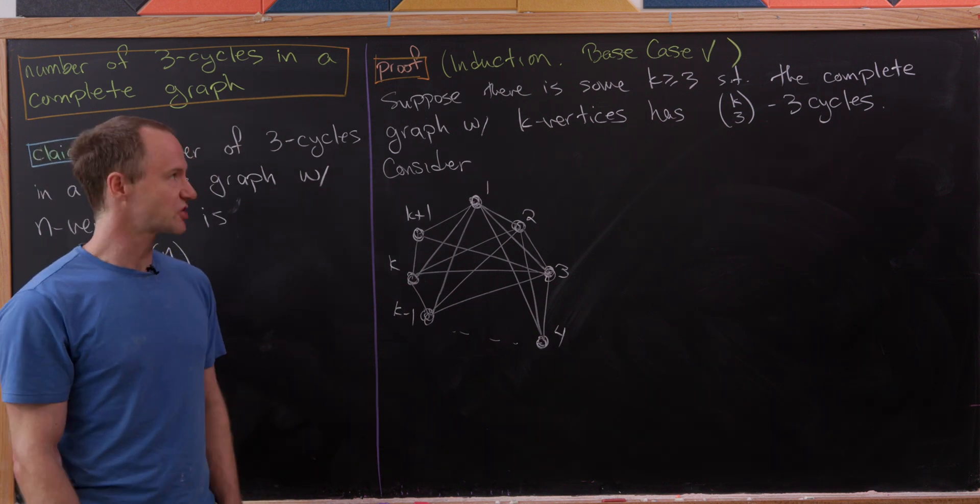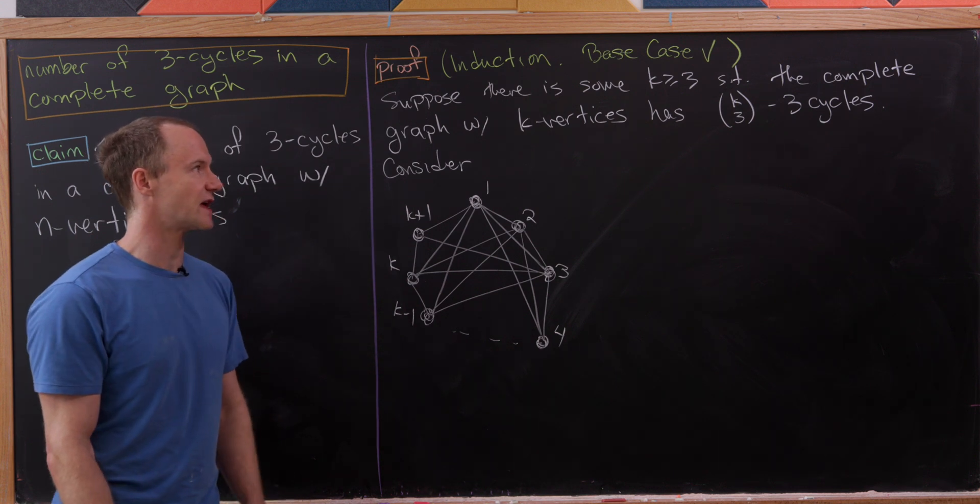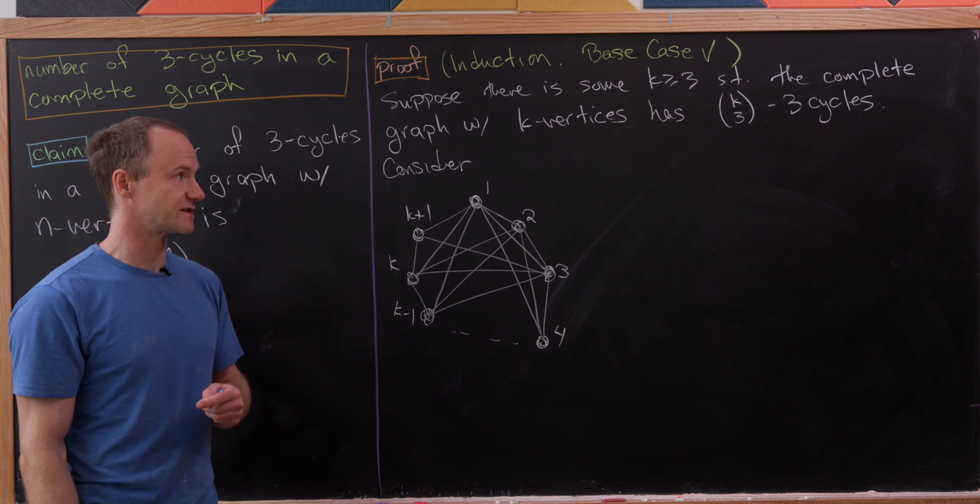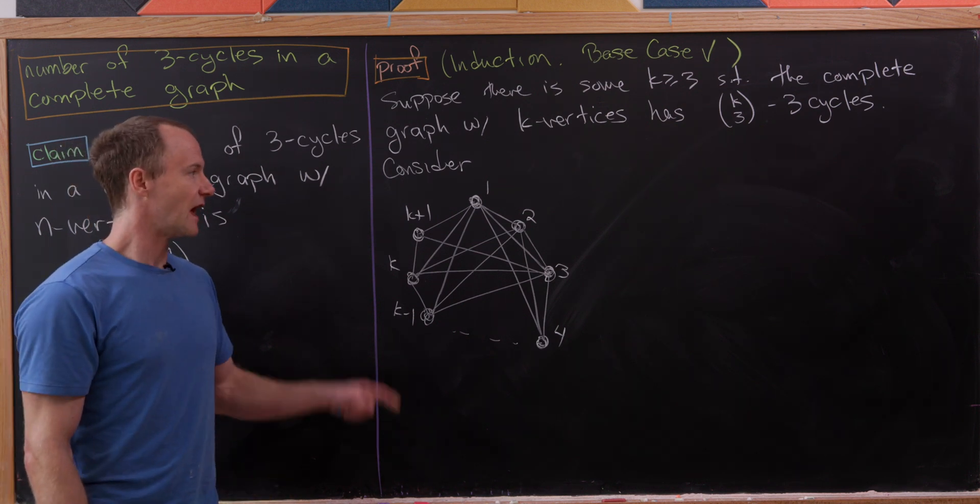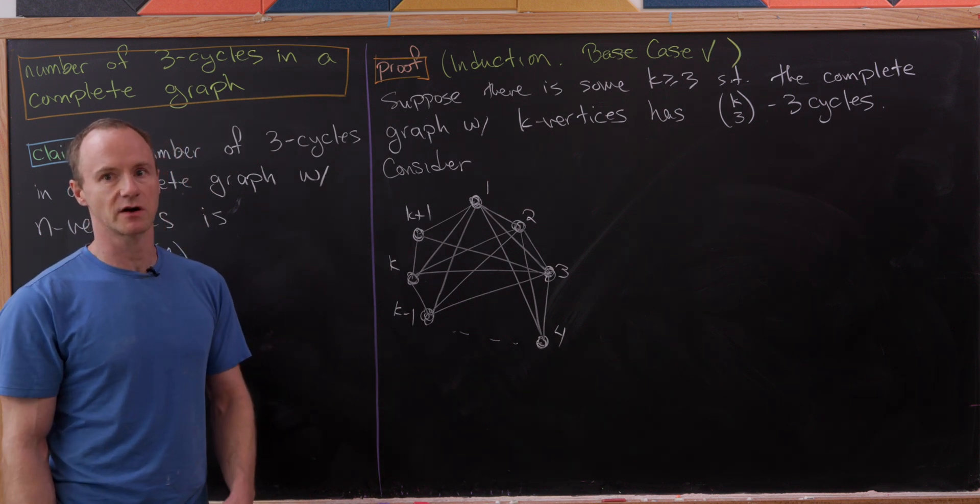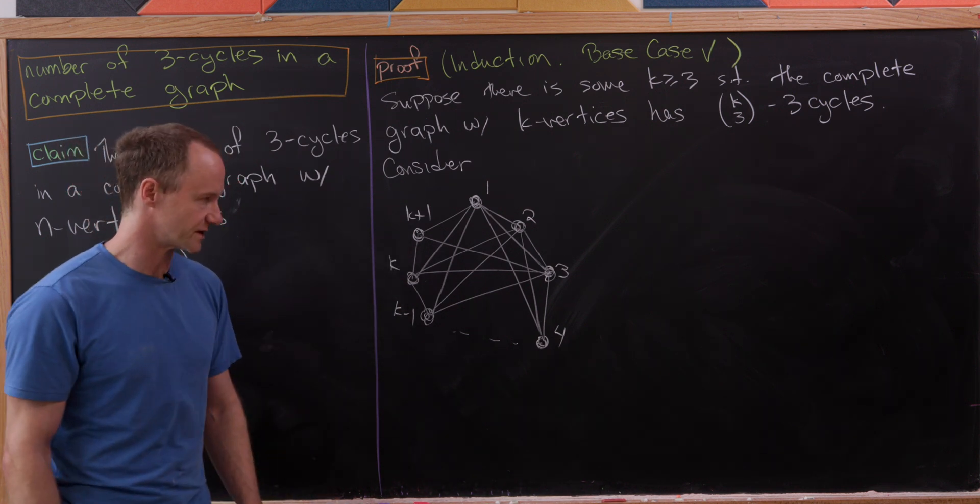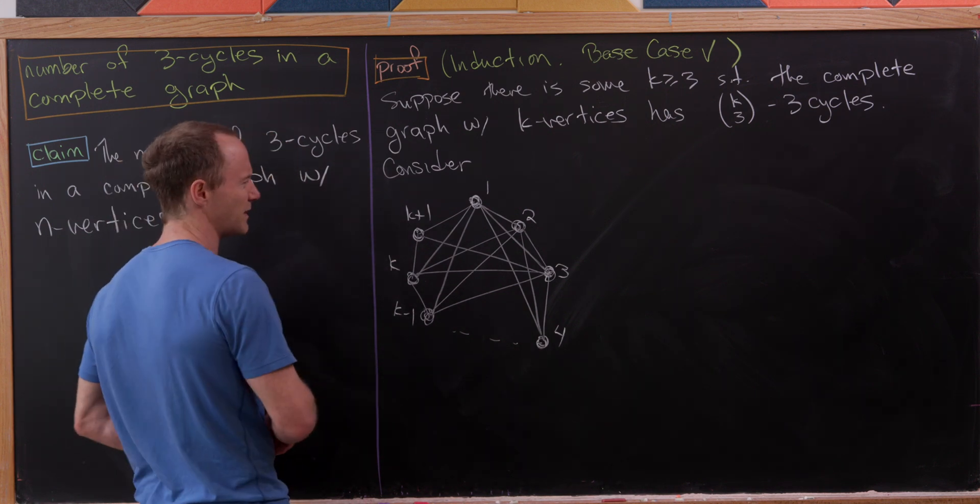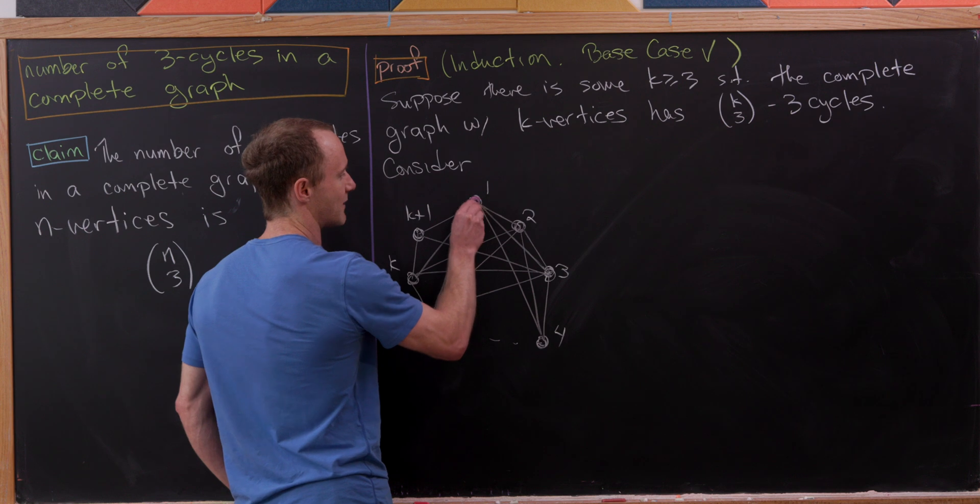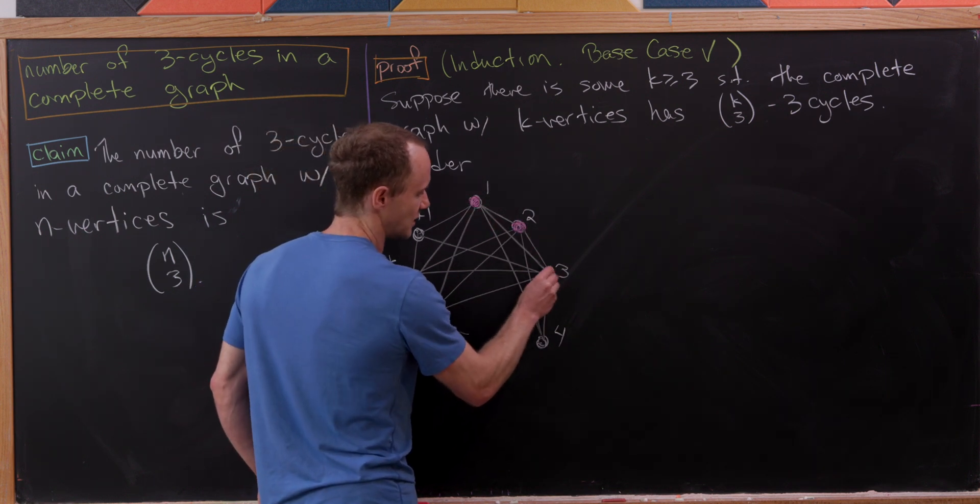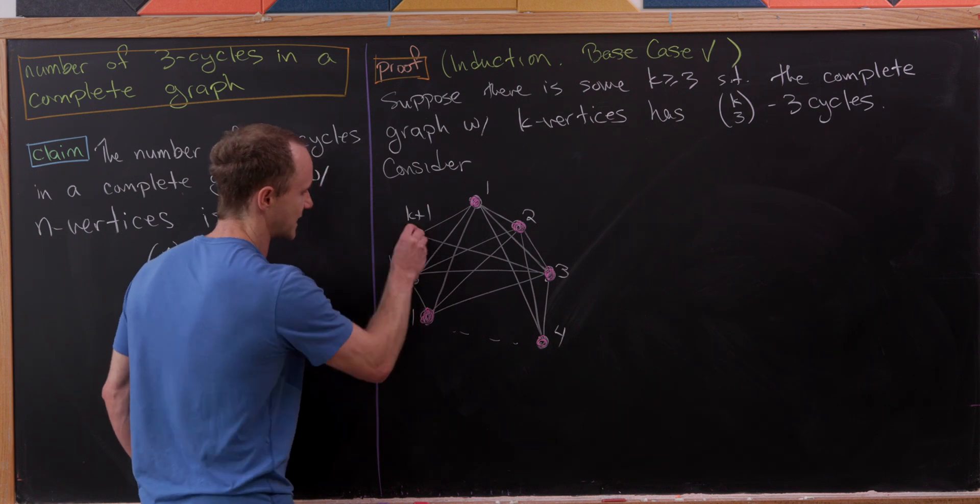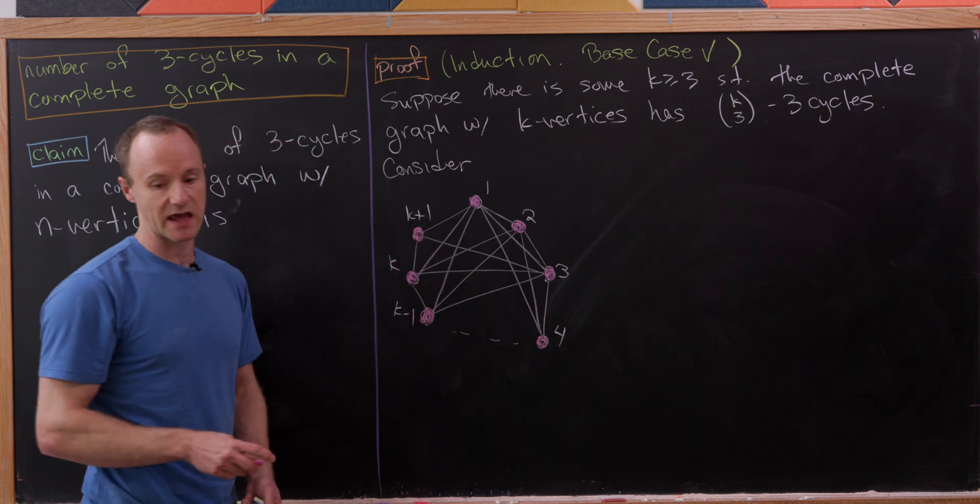Now we'll make an induction hypothesis. Suppose that for some k ≥ 3, we have a complete graph with k vertices, and it has k choose 3 three-cycles. Next, we want to consider the complete graph with k+1 vertices. I've arranged them like this. This is a bit messy, so maybe I'll make the vertices magenta. I've got my number one vertex, number two, number three vertex, four, and over here, k-1, k, and k+1.